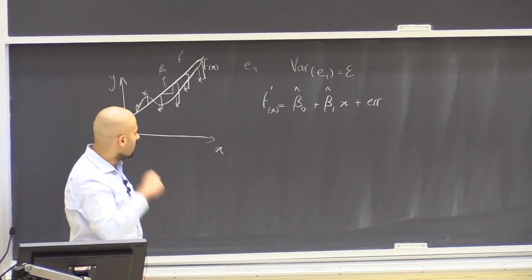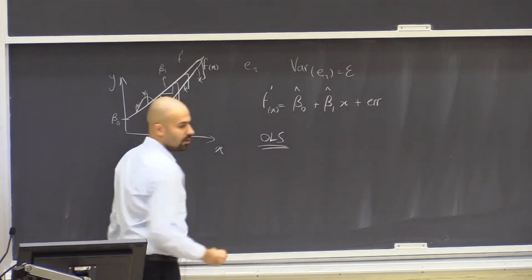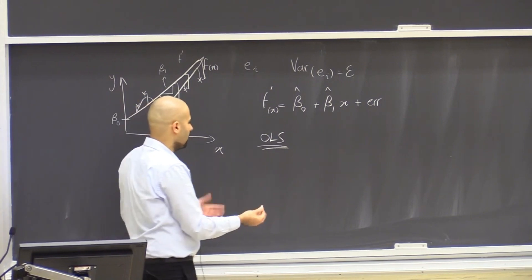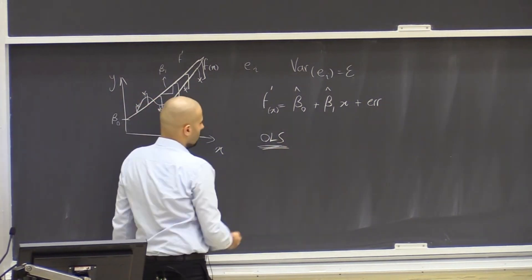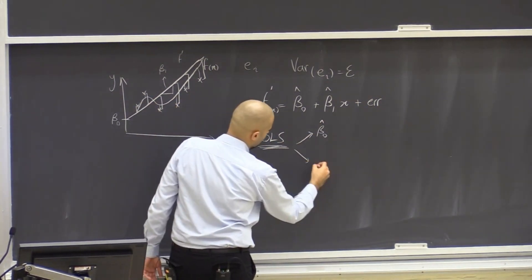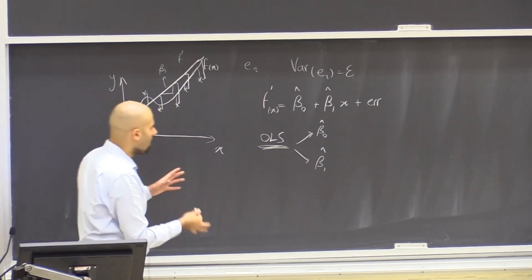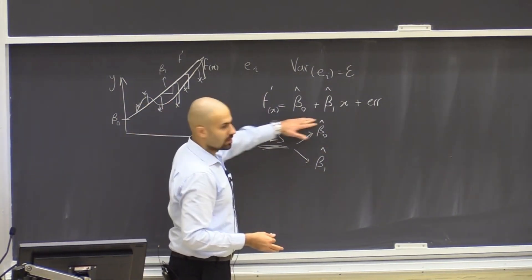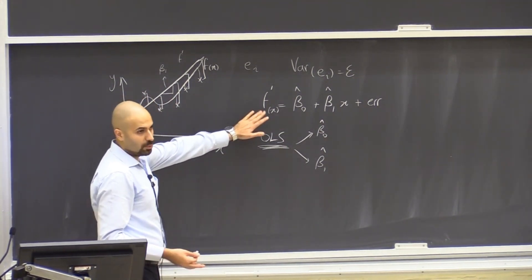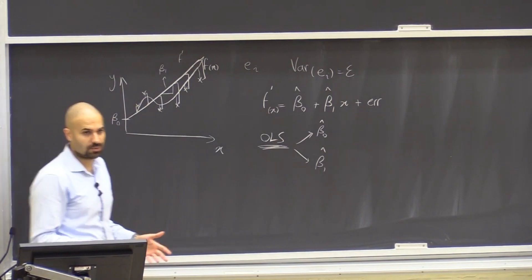With ordinary least squares — a methodology implemented in statistical packages like Python — we can get the estimates beta zero hat and beta one hat. When we have these estimates, we have a function, and with that function we can make predictions about the value of f prime for a certain input x. Any questions so far?